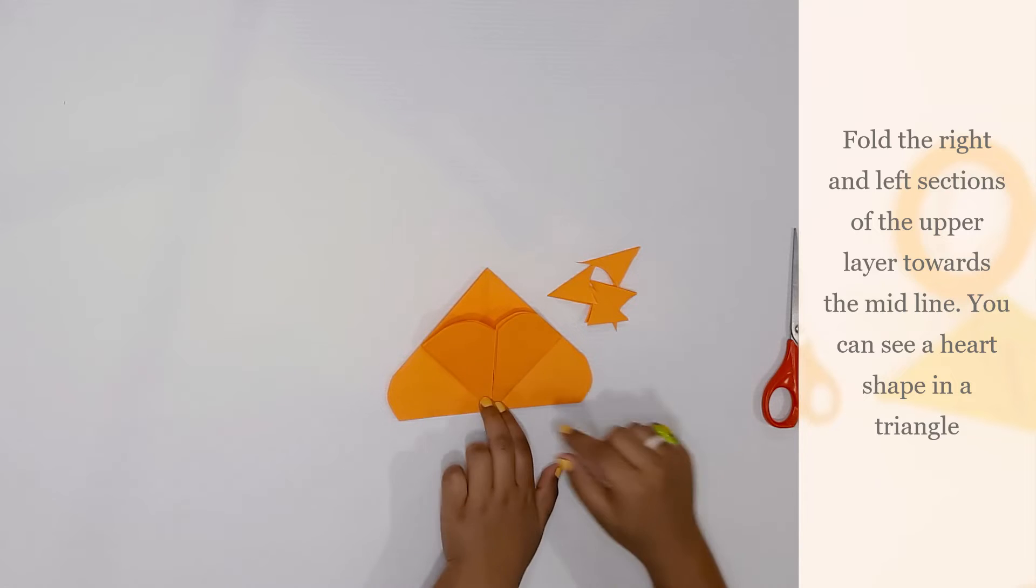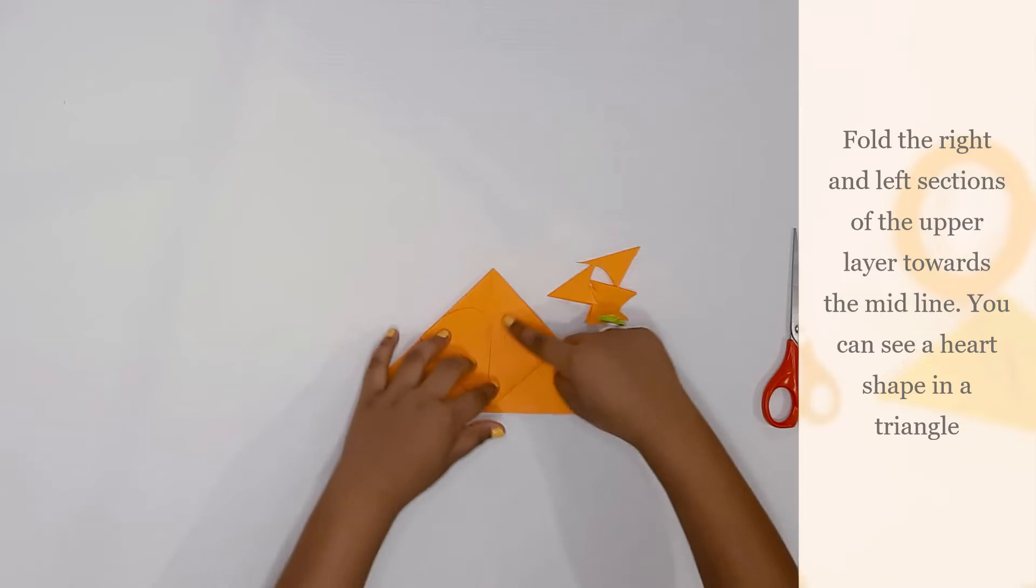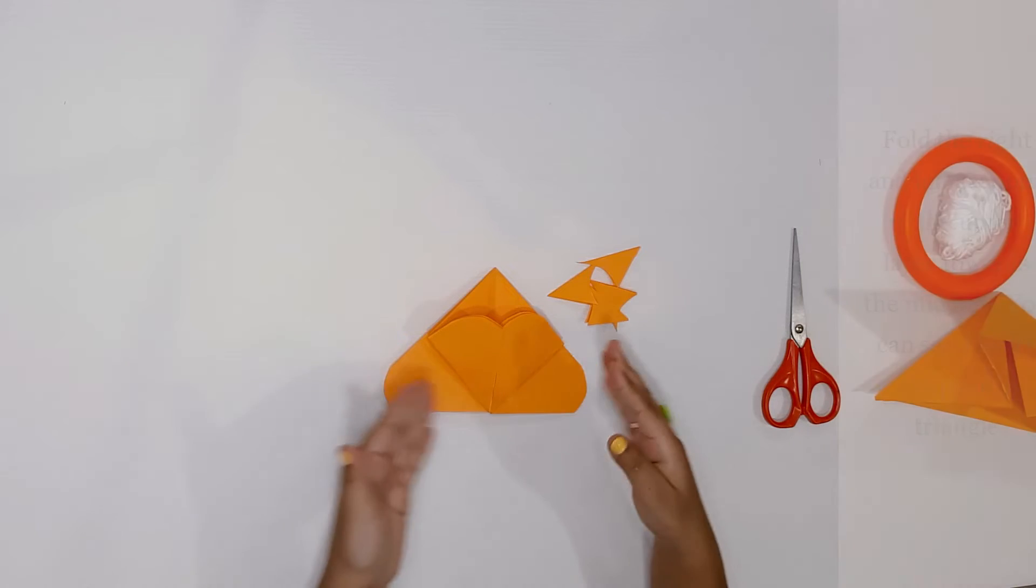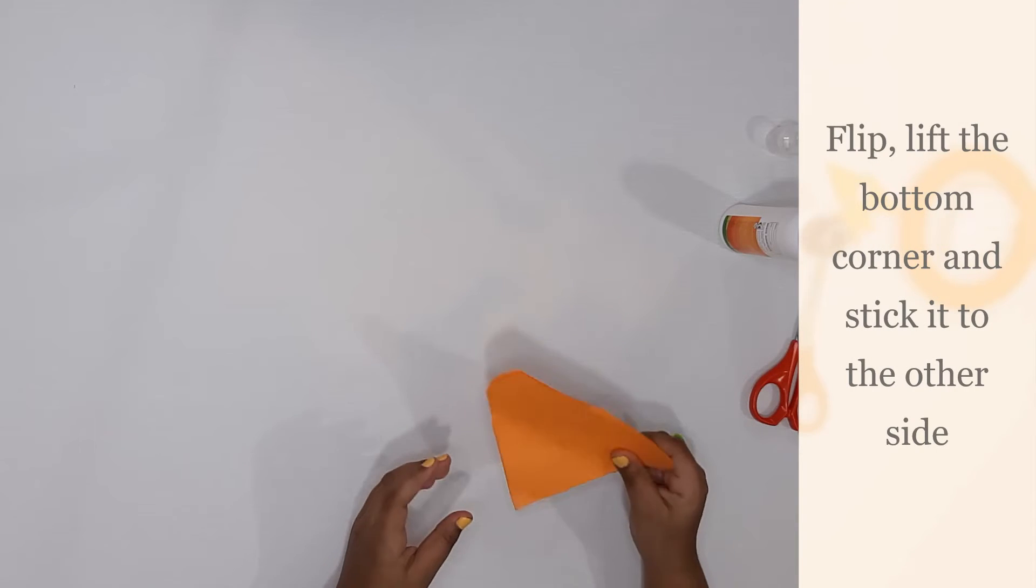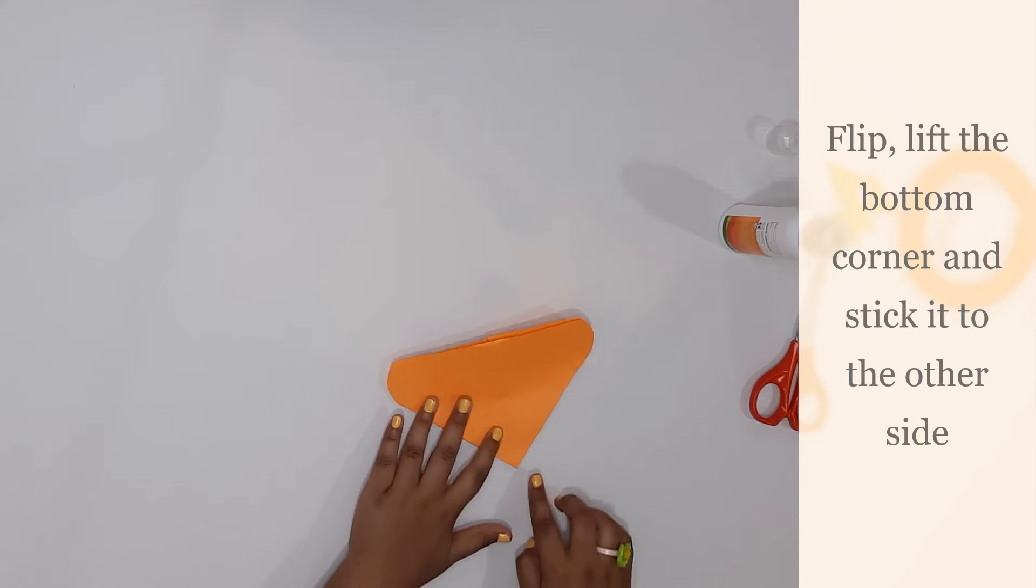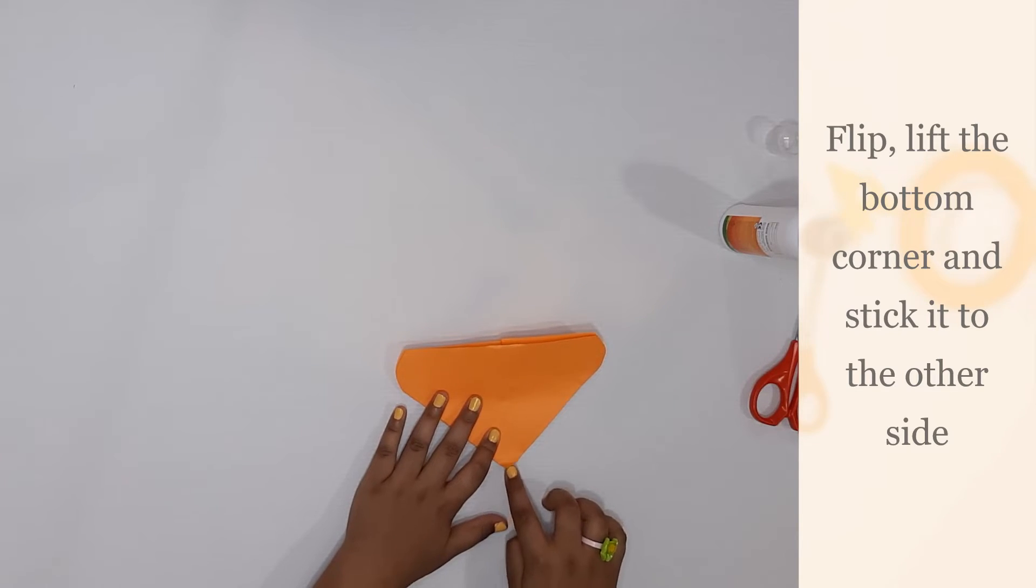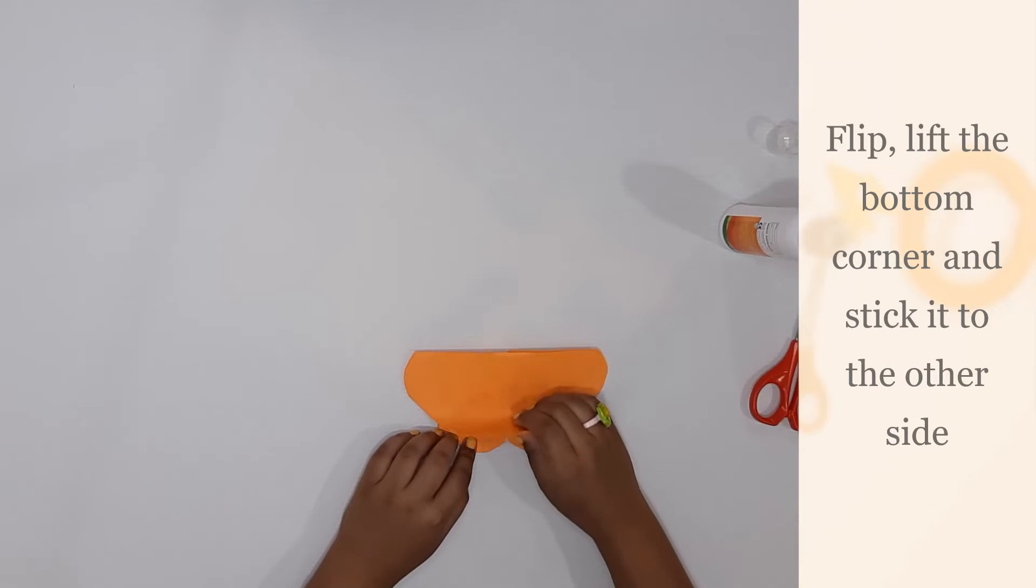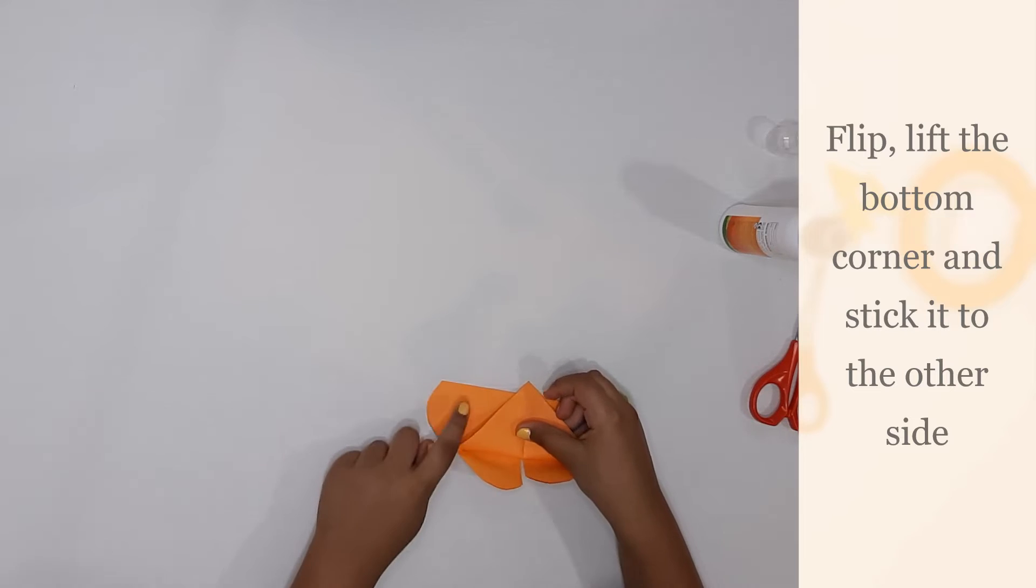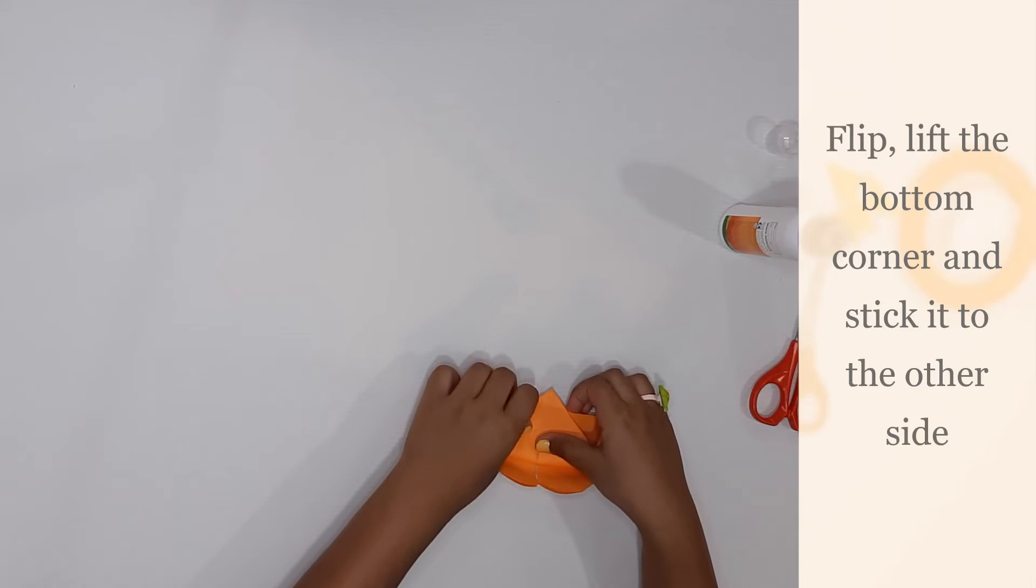Now you see it looks like a heart inside the triangle. Now flip it and then you see this corner isn't it? Lift it up and then pull it a bit beyond this edge. You have to do this step very carefully. Flip it again.